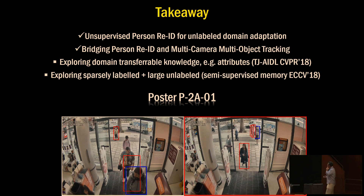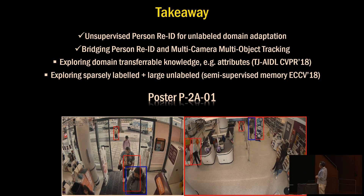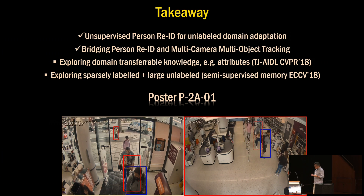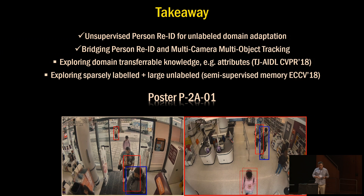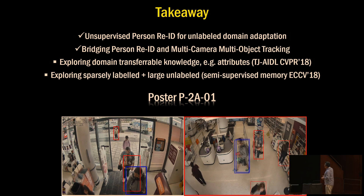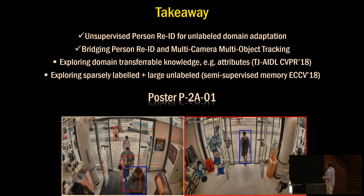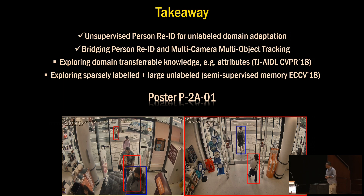The take-home message: in this work, we perform unsupervised person re-ID aimed at enabling domain adaptation, and we explore bridging person re-ID with multi-camera, multi-object tracking. Two related research directions address the underperformance of fully unsupervised methods: transfer learning using intermediate attributes — presented earlier at CVPR 2018 — and exploring sparsely labeled images with large quantities of unlabeled videos using semi-supervised memory, presented yesterday with a poster this afternoon. Please go have a look. Thank you.